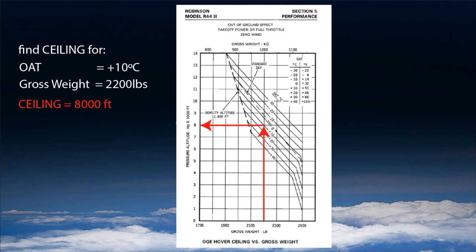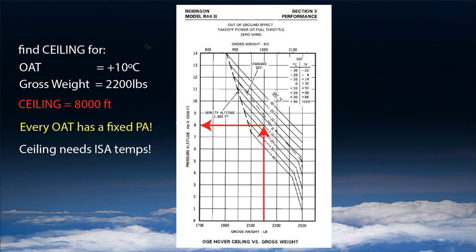The reason that's wrong is we don't have the combination of OAT and altitude — every OAT has a fixed pressure altitude. To compute the ceiling using this chart, the only way to do it is to use ISA temperatures. That's the only way to use this chart. The ISA line is noted as 'standard day' — it's the dotted line here.